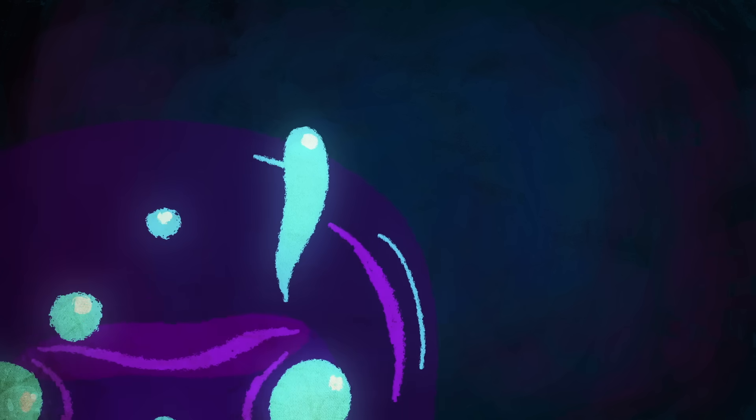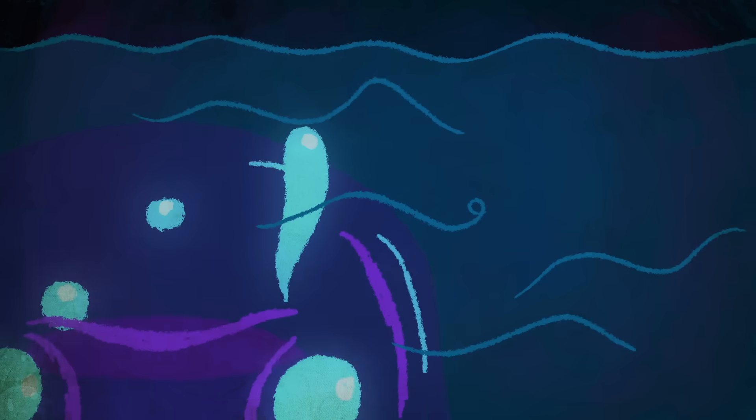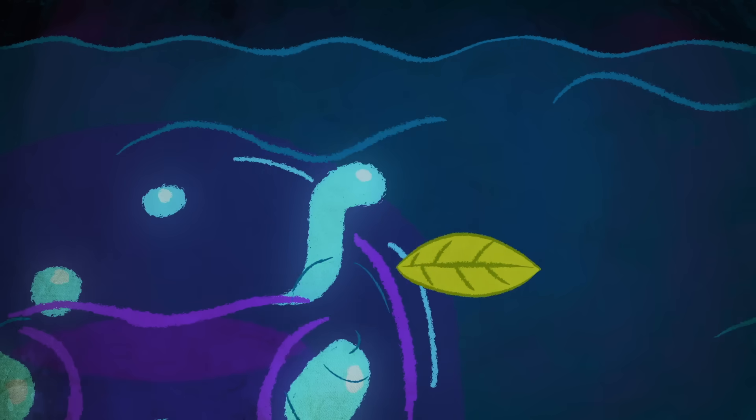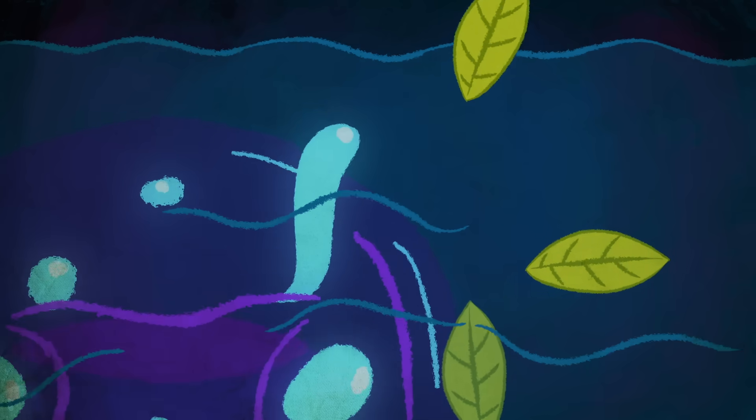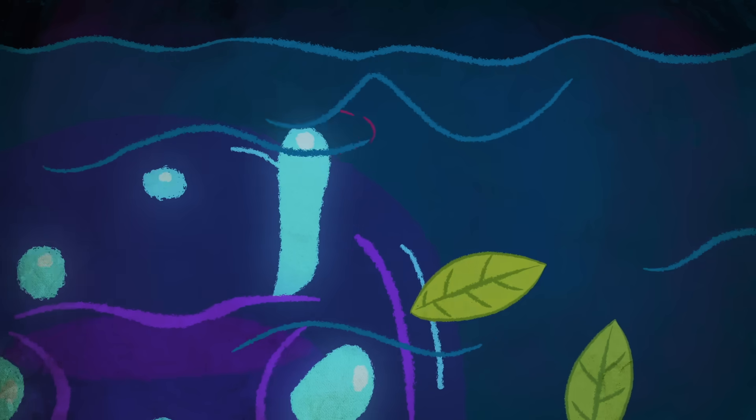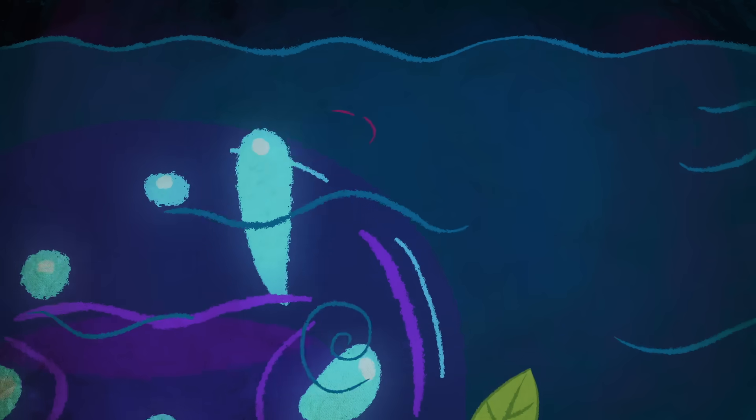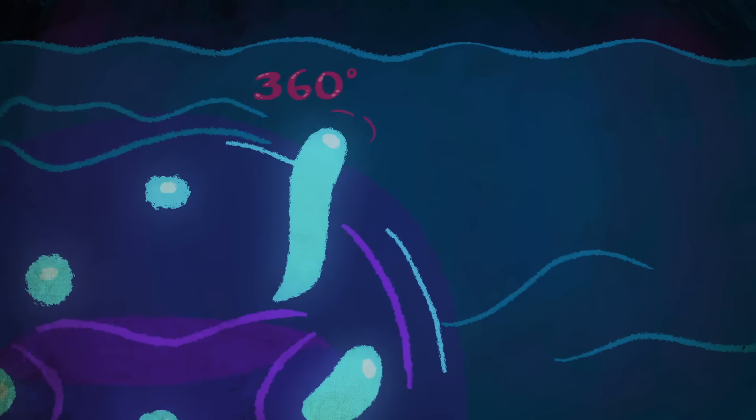Four of its eyes are curved upward on stalks. This allows the jellyfish to peer through the surface of the water, looking for the canopy of the mangrove trees where it feeds. In fact, this may be one of the only creatures with a 360-degree view of its environment.